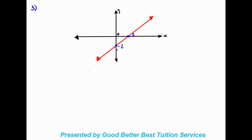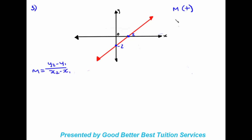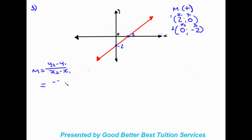In this example we are given two intercepts — both the x and y intercept. The gradient is going to be positive, which will help us check our answer. Working out m = y₂ minus y₁ over x₂ minus x₁: our x-intercept is (2, 0) and our y-intercept is (0, -2). We'll make the x-intercept point one and the y-intercept point two.